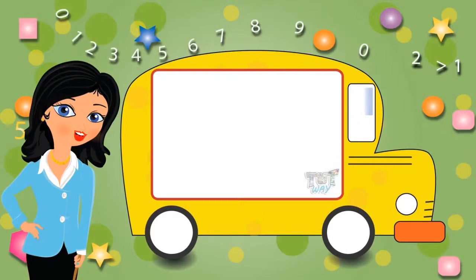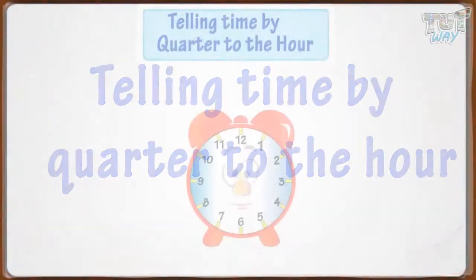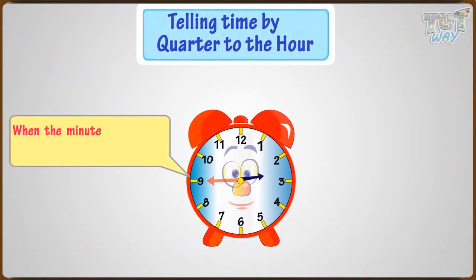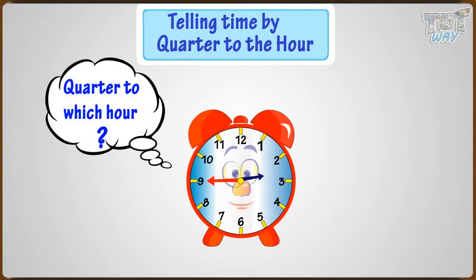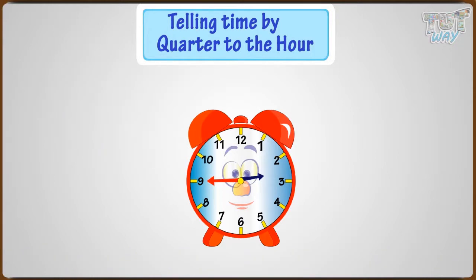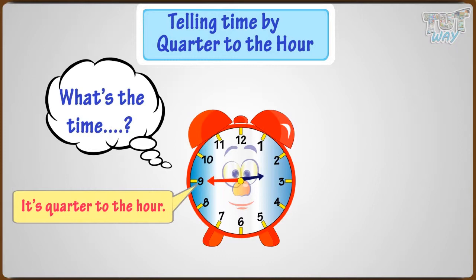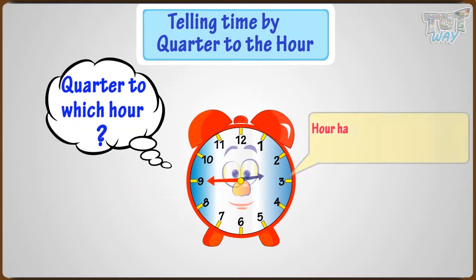Hi kids, now we will learn telling time by quarter to the hour. When the minute hand moves round to nine, it is quarter to the hour — but quarter to which hour? It is quarter to the hour from which the hour hand is just a quarter away. Let's learn more with an example. What's the time in this analog clock? The minute hand is pointing at nine, so it's quarter to the hour.